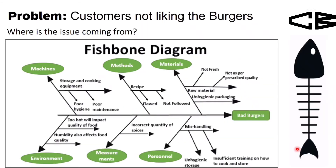Next is the Fishbone Diagram. This is used when the problem is generic. For example, the problem is that customers are not liking the burgers. Where is the issue coming from? When you are unaware, you need to start categorizing the issues.